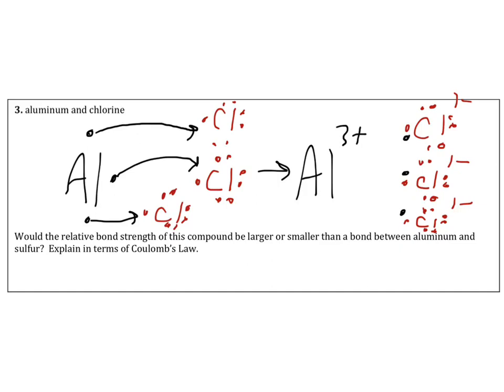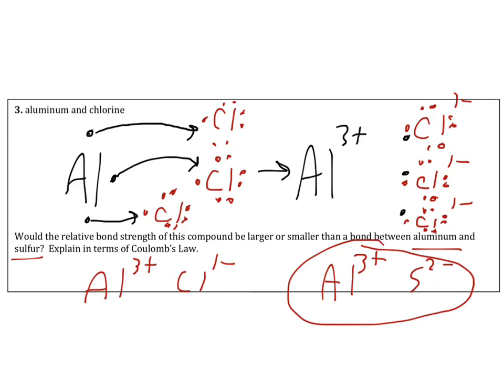Would the relative bond strength of aluminum chloride be larger or smaller than between aluminum and sulfur? Aluminum makes a three plus and chloride makes a one minus, compared to aluminum with a three plus and sulfur with a two minus. Aluminum sulfide will have a stronger force of attraction because the charges are larger — a two minus is a greater charge than a one minus.